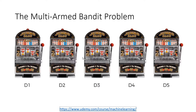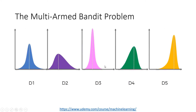These are the machines and these are the distributions that we have for these machines. We can clearly see that this machine is the best machine, because the mean, mode, and median is higher here compared to the others. Therefore, we have to find a way to know that this machine is the best machine.